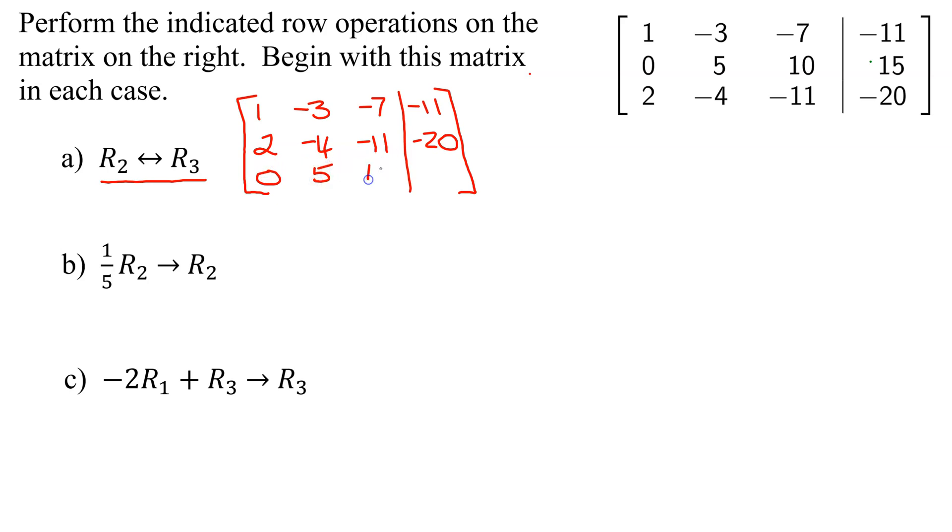And row 3 was my old row 2, so it's 0, 5, 10, and 15. So that is the answer to part A.